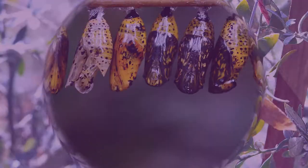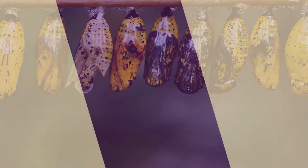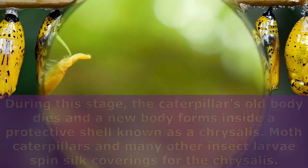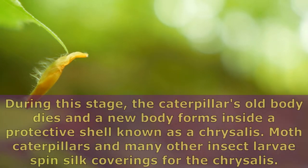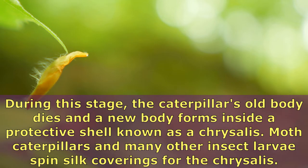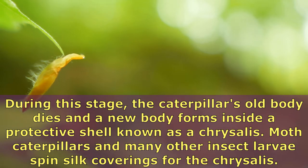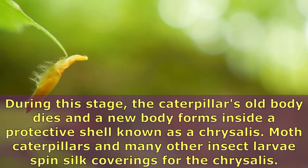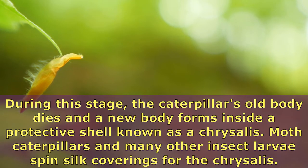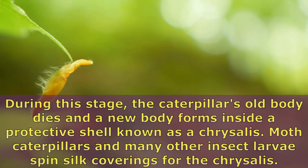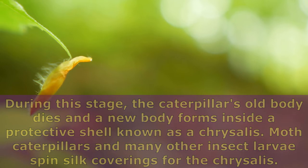The third stage is called Pupa. During this stage, the caterpillar's old body dies and a new body forms inside a protective shell known as a chrysalis. Moth caterpillars and many other insect larvae spin silk coverings for the chrysalis.